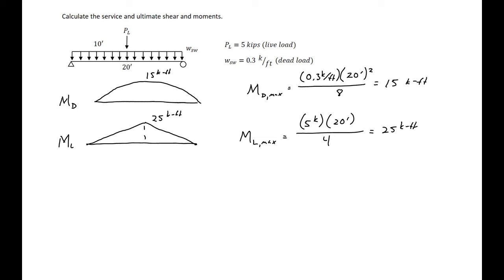Our service level moment is found by adding the dead and live load moments. At mid-span, the service level moment is 15 kip-feet plus 25 kip-feet, with a shape somewhere in between the parabolic and triangular shapes, giving 40 kip-feet as our service load moment.